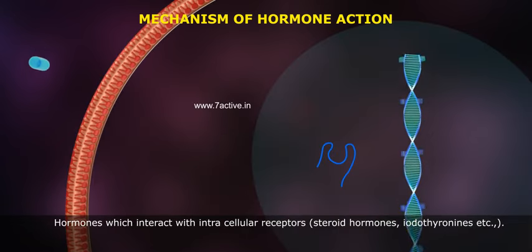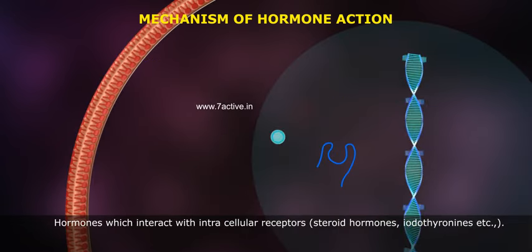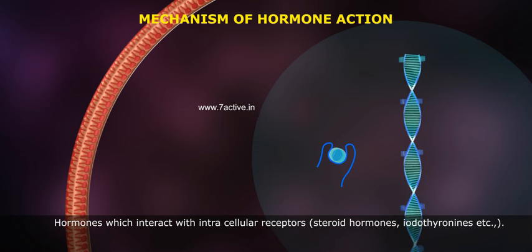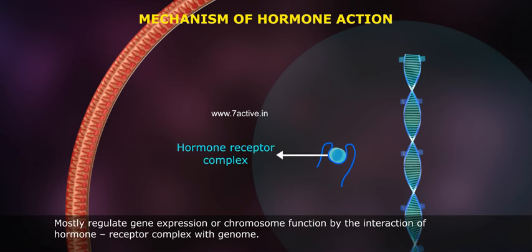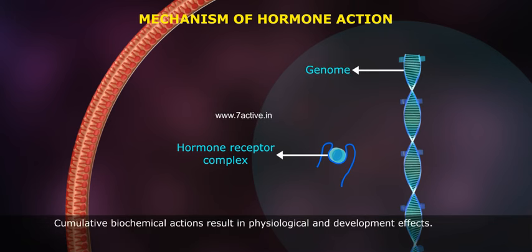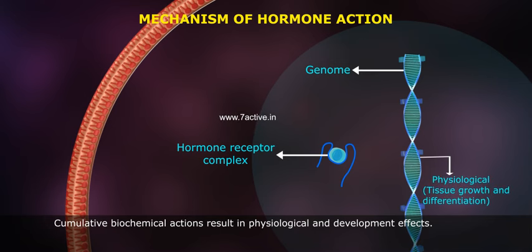Hormones which interact with intracellular receptors — steroid hormones, iodothyronins, etc. — mostly regulate gene expression or chromosome function by the interaction of the hormone-receptor complex with the genome. Cumulative biochemical actions result in physiological and developmental effects.